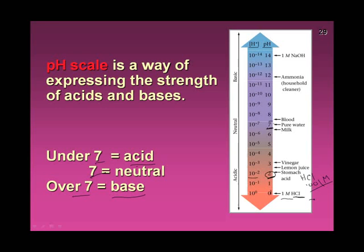Our blood is just a little above 7. Milk is a little acidic. Pure distilled water is 7 — neutral. Ammonia has a very high pH, so it's a base. If I have something very basic like one molar sodium hydroxide, the pH is at the other extreme. The scale runs from 0 to 14.